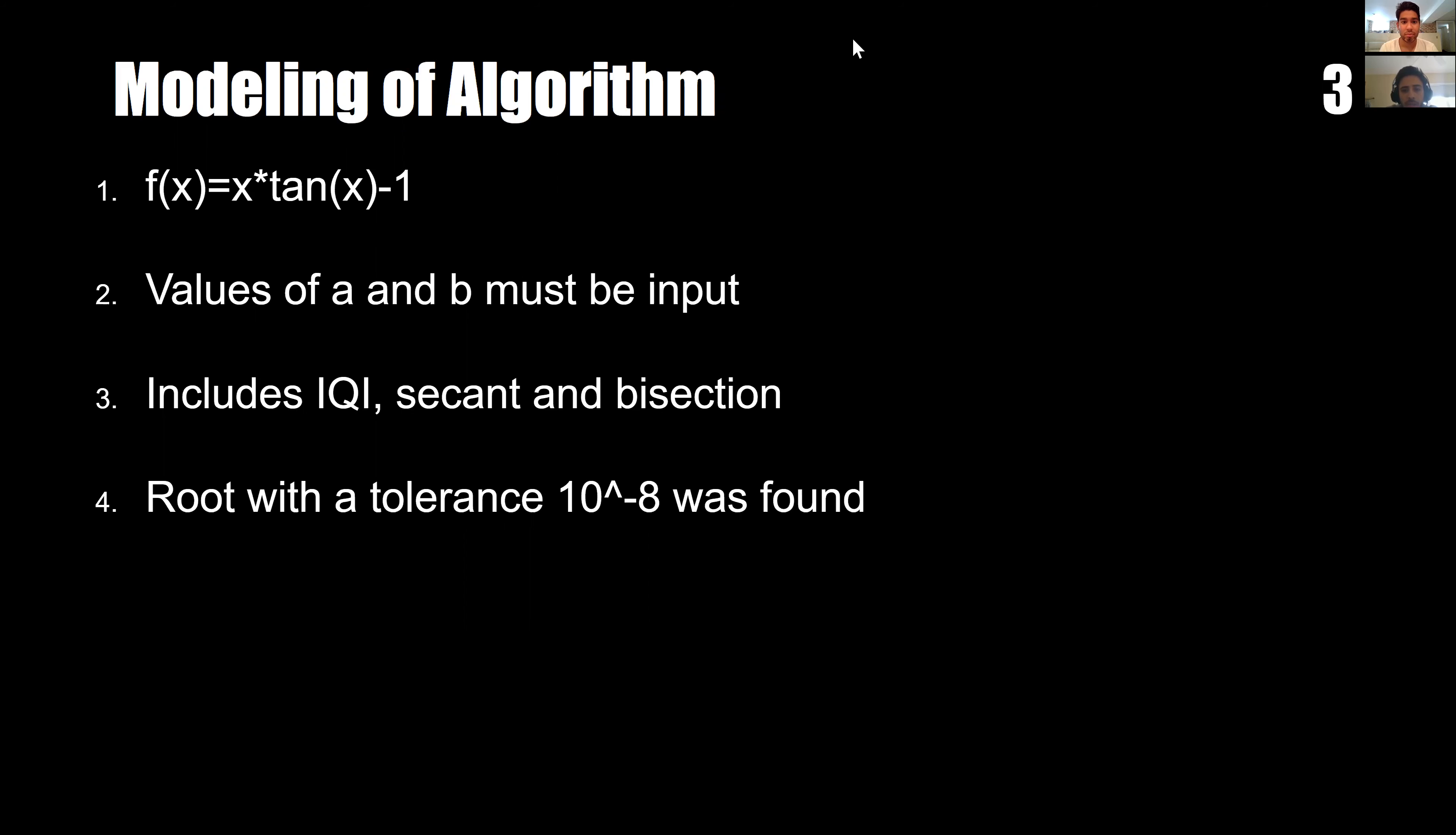We specified values of a and b, which is the range where the root can be found. The values we chose for this function were from zero to pi over two. They must be input in the code and can be changed depending on the user.